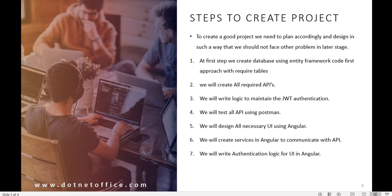Then we will write the logic to maintain JWT authentication — how we can authenticate and how we can generate tokens using JWT. This we are going to implement into the Angular API. Then using the Postman tool we will test all these APIs.